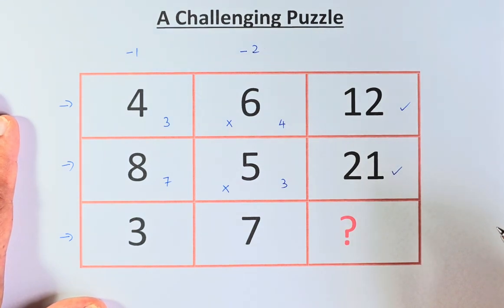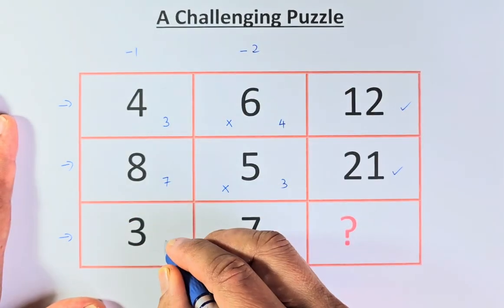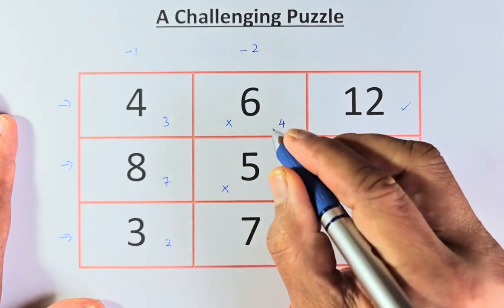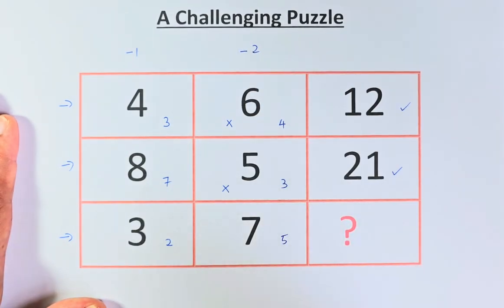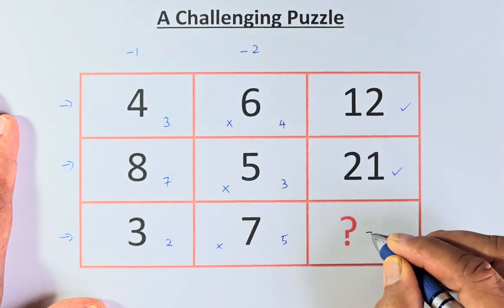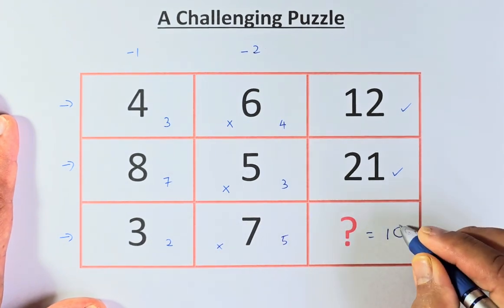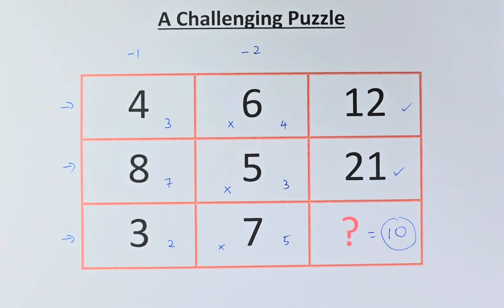So 3, 7 question mark, the same trick is going to happen. 3 minus 1 gives us 2. 7 minus 2 is 5. 2 multiplied by 5 and the question mark is equal to 10. I believe most of you will get it right because you guys are geniuses and I will see you in the next one. Cheers everyone and have a good day.